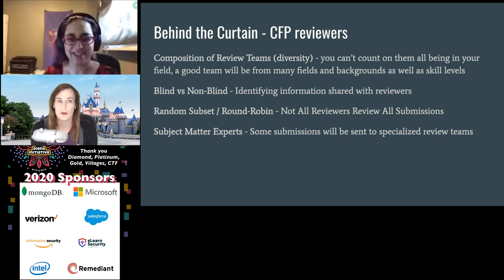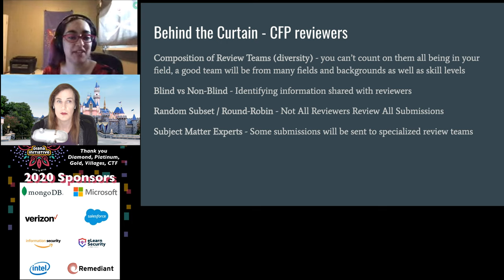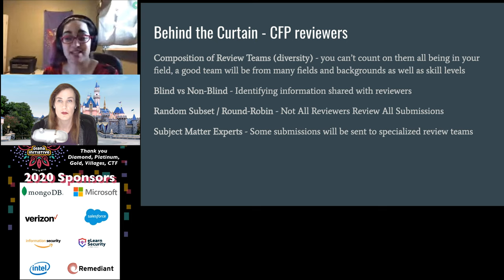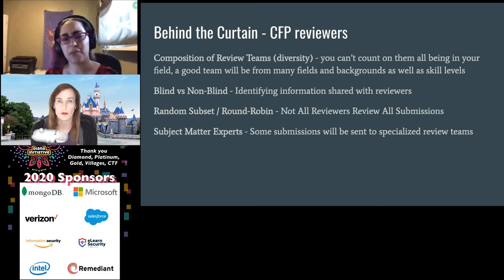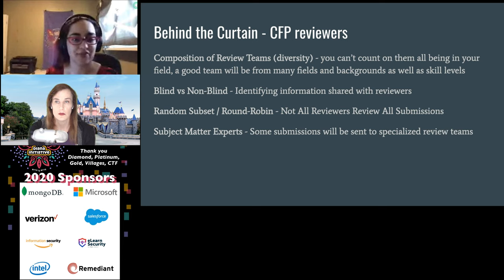Behind the curtains, what exactly happens? It really depends. You could have a variety of people reviewing the things — and you want a variety. Our CFP chair put in the effort to make sure there was somebody from red team, blue team, people experienced in different areas, all reading the submissions from a different point of view. That doesn't just apply to areas of expertise; it could be experience levels. You can also blind the submissions, which means the reviewers don't actually see the name of the person who submitted, or not blind, which is what a lot of conferences do.